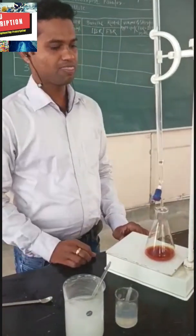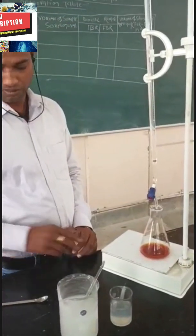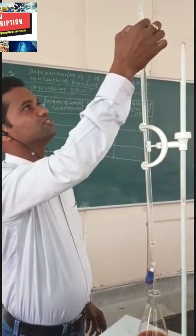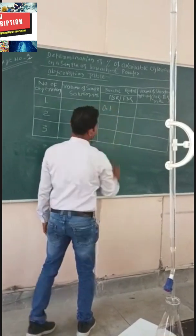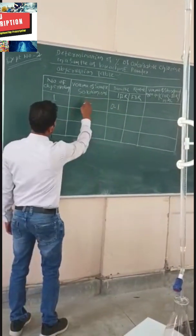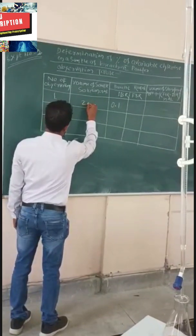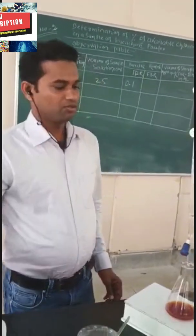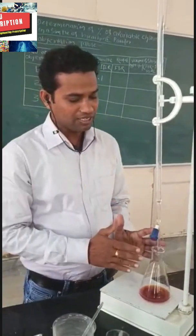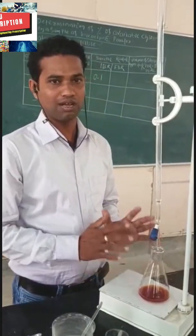Now we start titration. Before adding hypo solution from the burette, first we note the initial burette reading — it is 0.1. The initial reading is 0.1. The volume of sample solution pipetted out is 25 ml. Now we add hypo solution until pale yellow color appears.